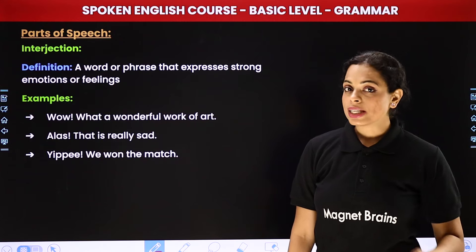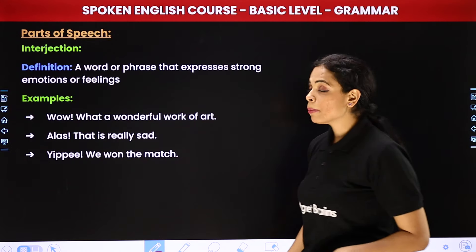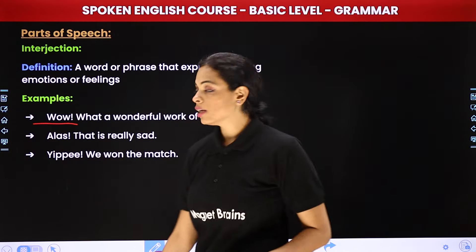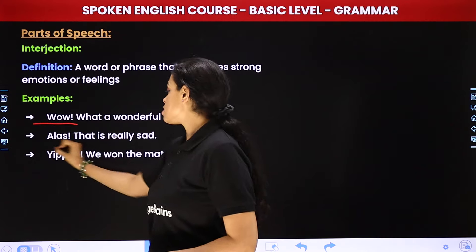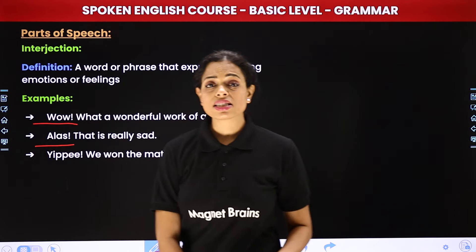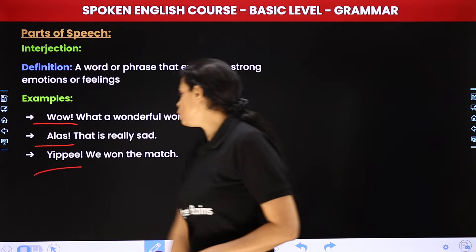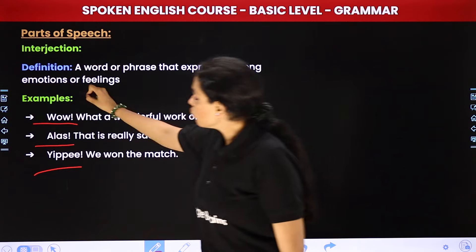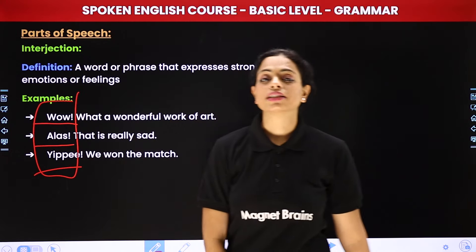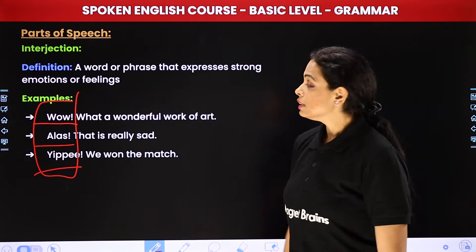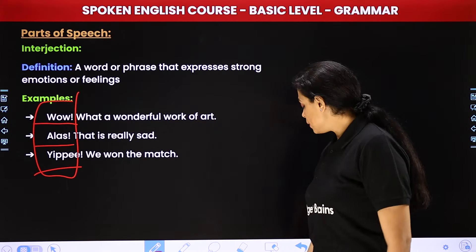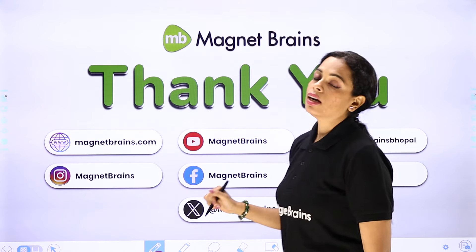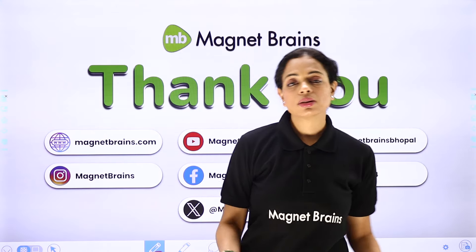Last hai aapka interjection — jahan aap koi shock ya surprise batate ho. For example: 'Wow, what a wonderful work of art!' 'Alas, this is really sad.' 'Yippee, we won the match!' So yeh saare words hain yeh aapke interjections — jahan pe aap kisi bhi cheez ko batate ho ki is it containing a shock or a surprise.